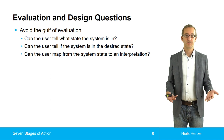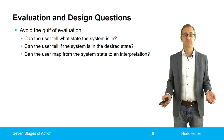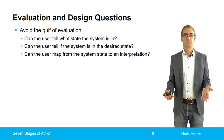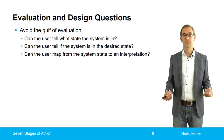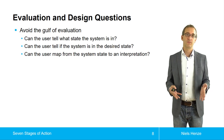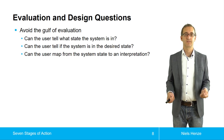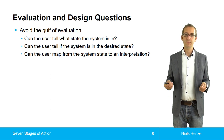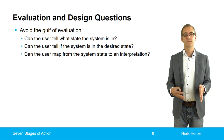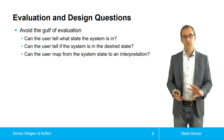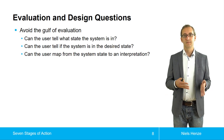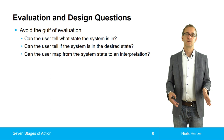We can also get other things out of the model. Avoiding the gulf of evaluation is probably the more important step. You have to support users in being able to tell the state of the system, and you have to ensure that users can figure out if the system is in the desired state. You need to ensure they can map from the system state to an interpretation — so they see the system state, they understand it, and they understand the meaning of it.